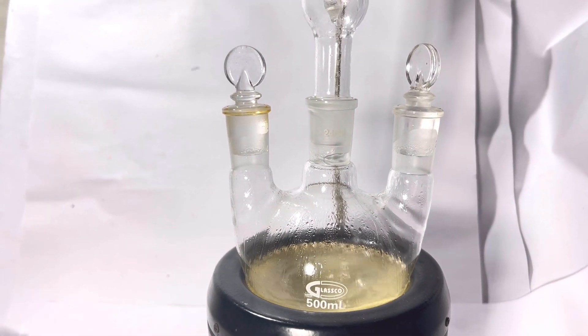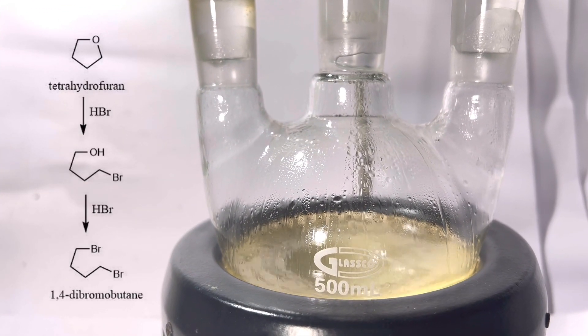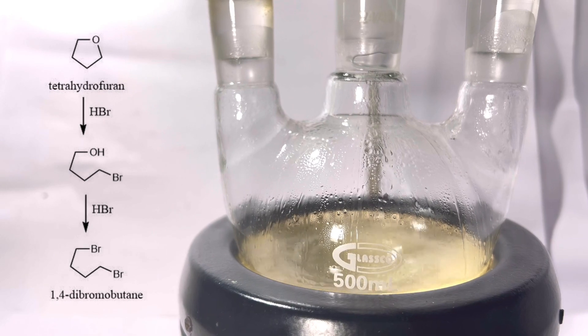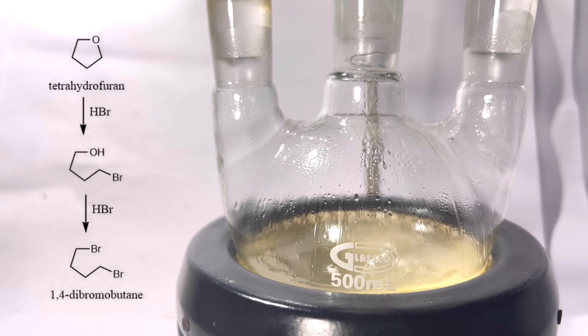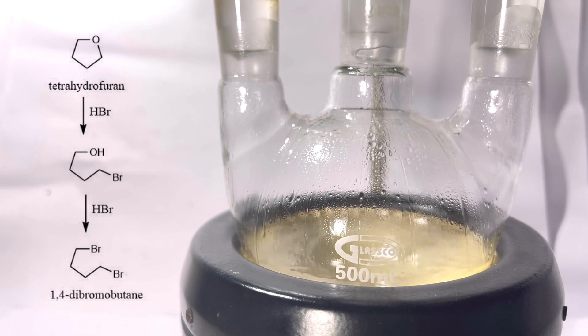Let's quickly see the reaction here. The ring structure of the molecule is broken up to form a straight chain molecule. This can be called a ring opening reaction and it takes place with sulfuric acid and excess of hydrobromic acid.